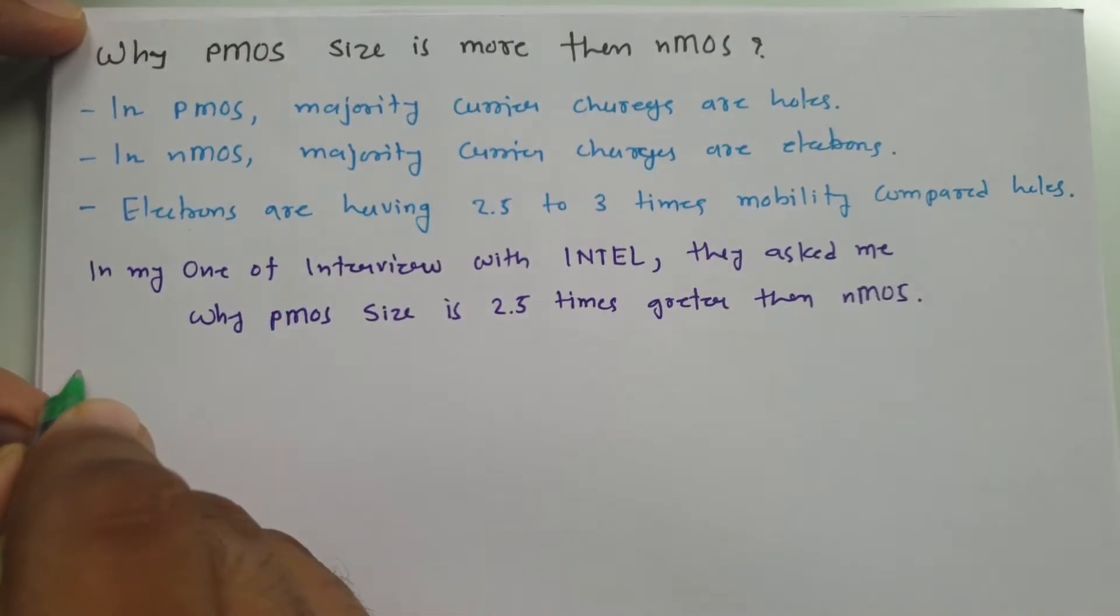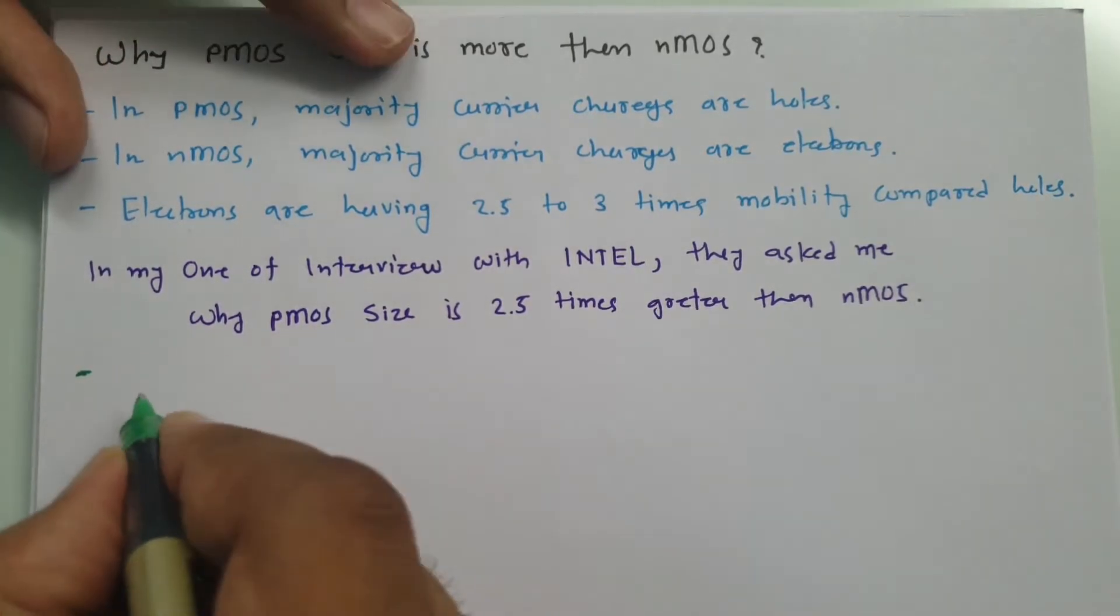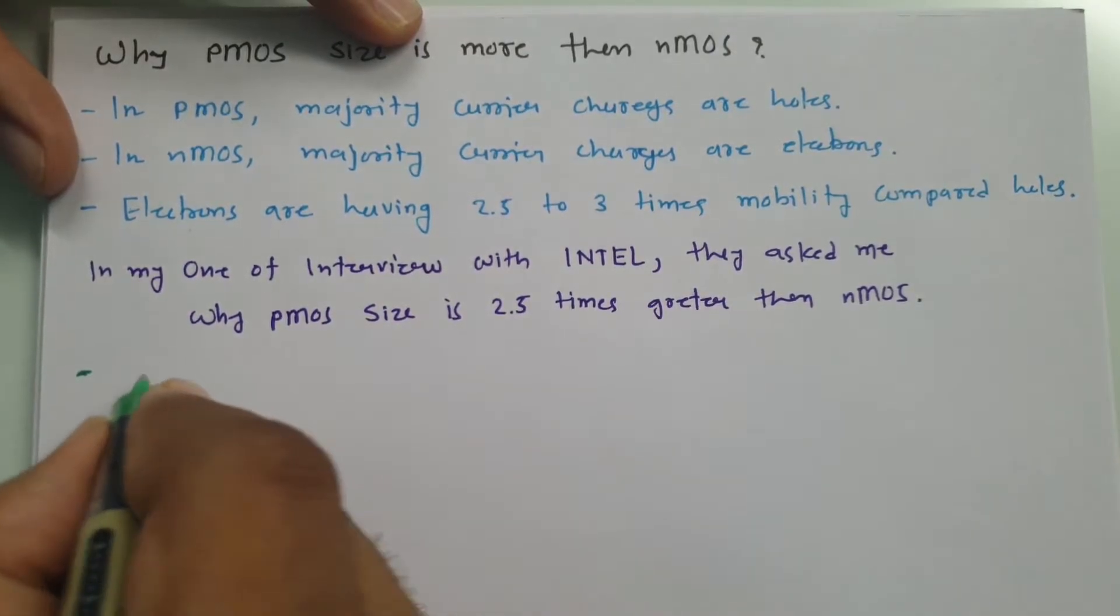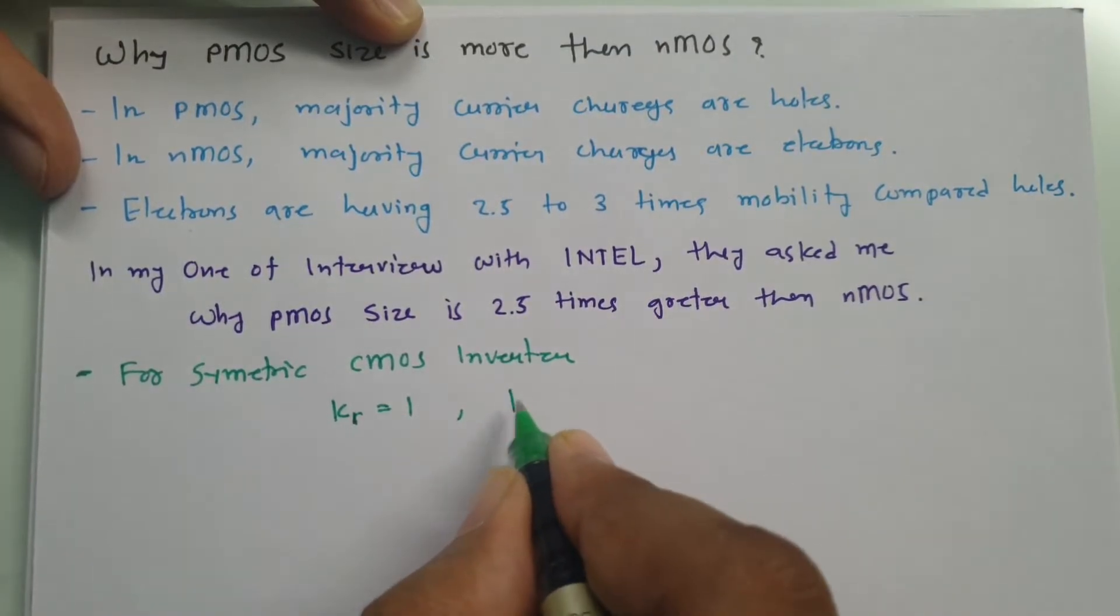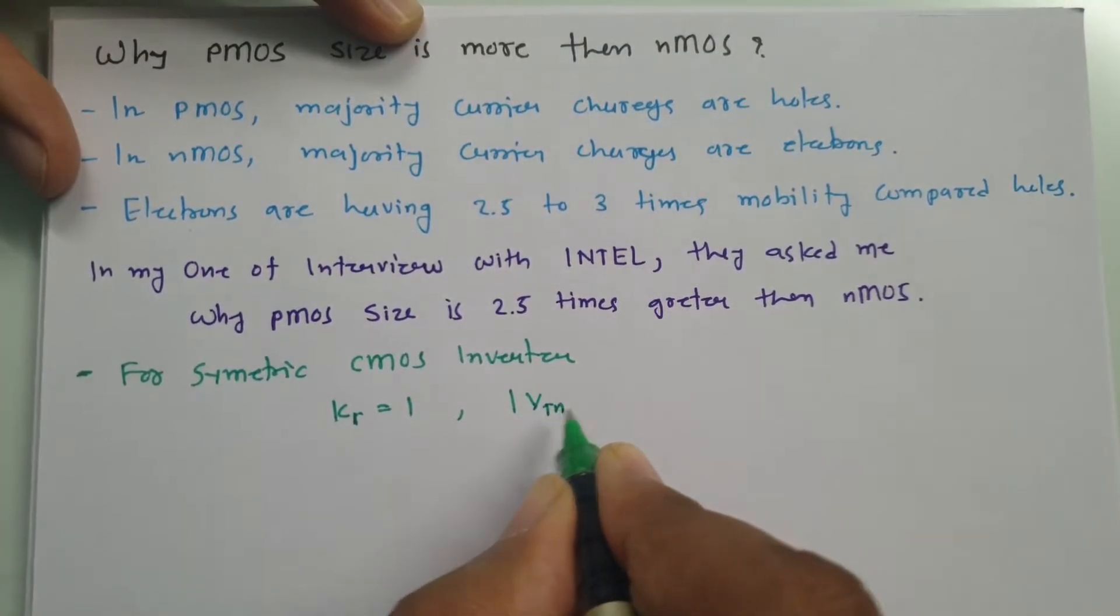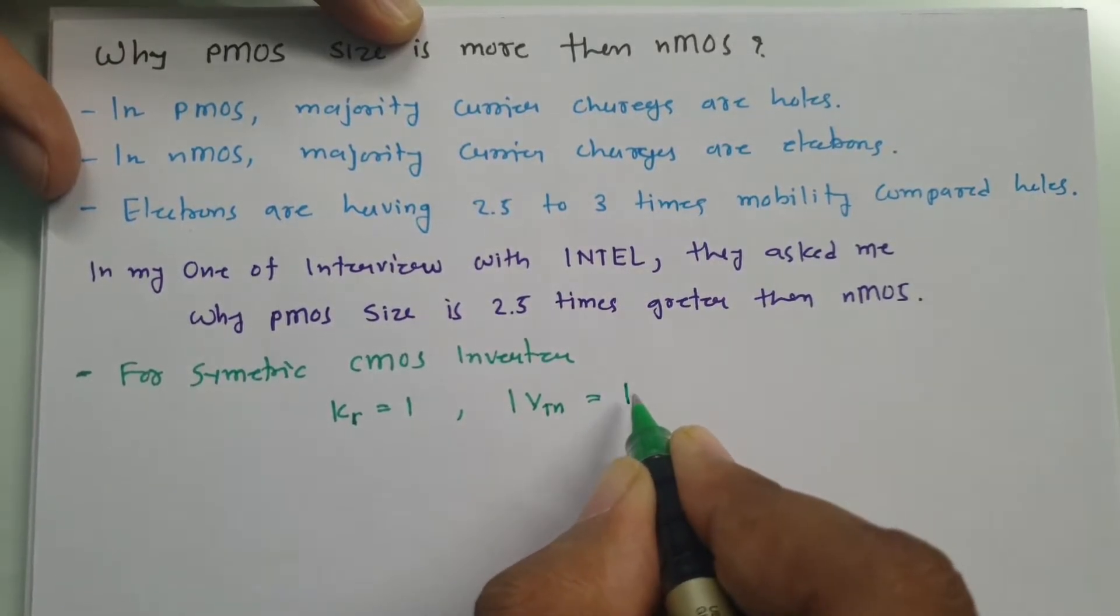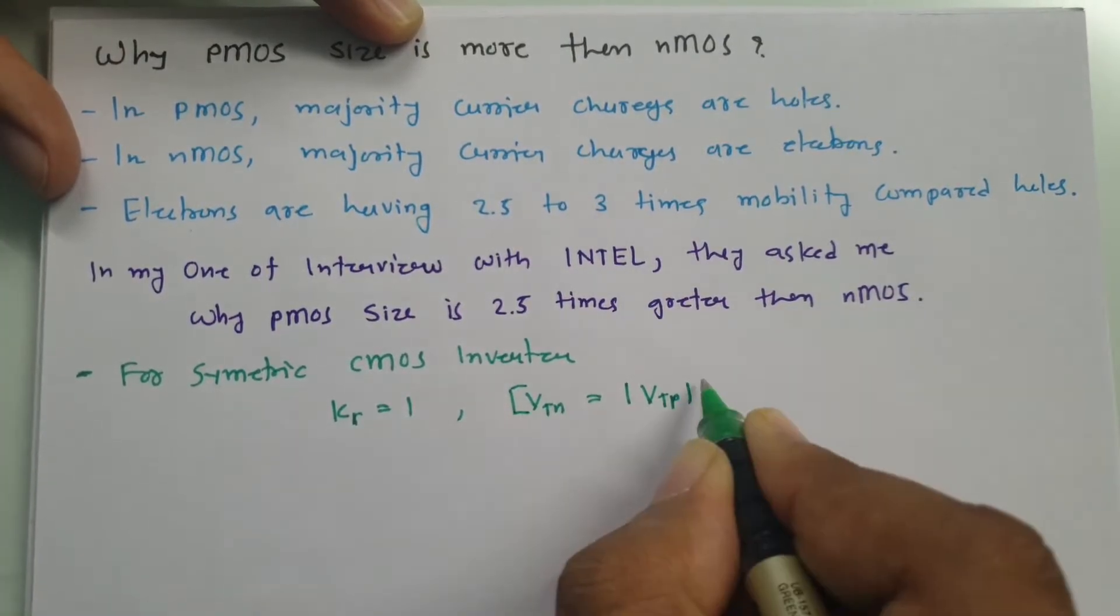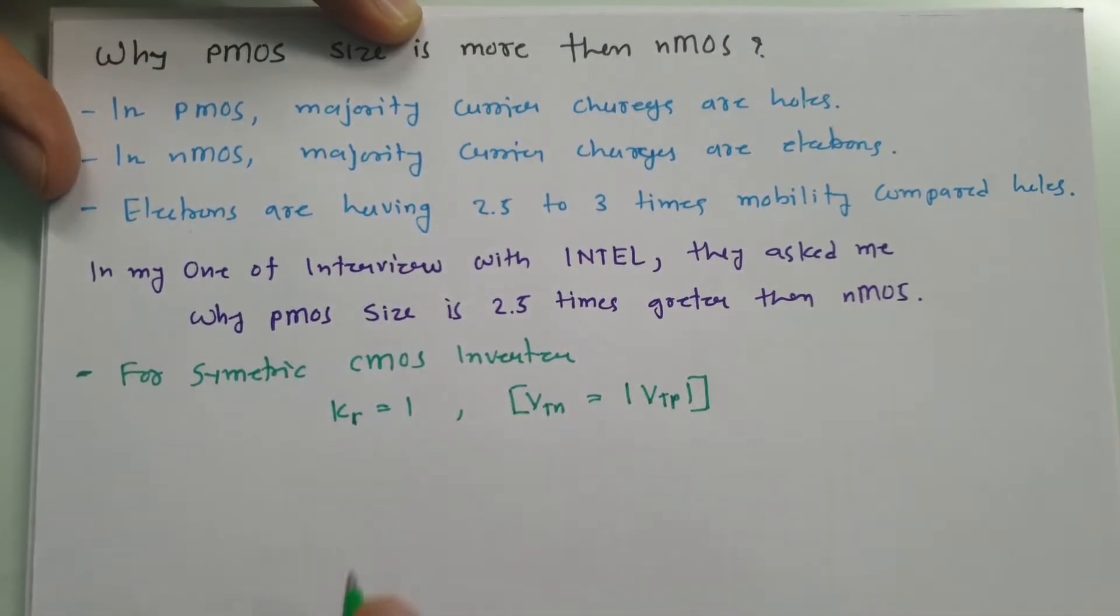If you see CMOS inverter, and if we talk about symmetric CMOS inverter, in symmetric CMOS inverter you will be finding that value of KR, that should be equals to 1. As well as one more condition that it should follow. Threshold voltage of N type material, that should be equals to mode of threshold voltage of P type material. This is what second condition that follows with CMOS inverter.